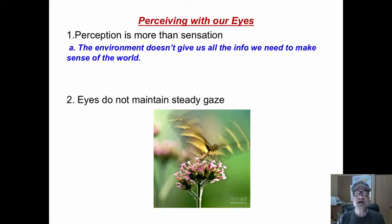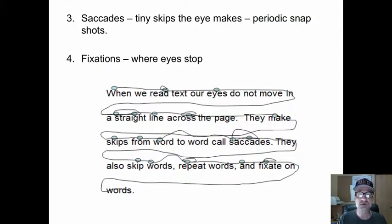Perceiving with our eyes. Perception is more than sensation. The media environment doesn't give us all the information that we need to make sense of the world. We take in some sensory input and combine it with the information that we already have. Now, here's what's interesting. Our eyes do not maintain a steady gaze, even if you're looking at it here. Your eyeballs do not stand straight out.